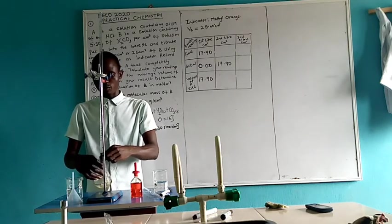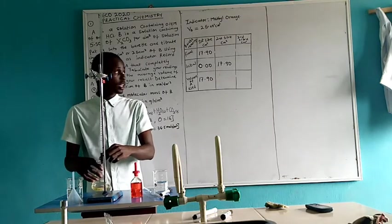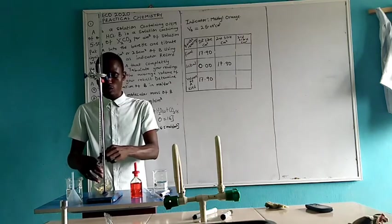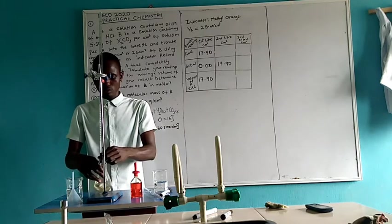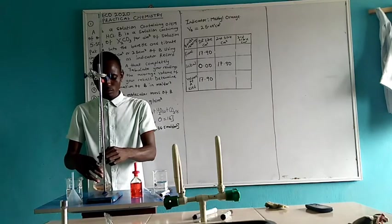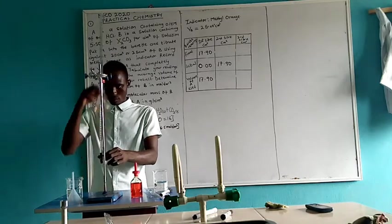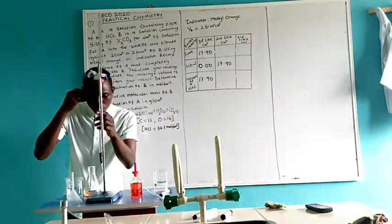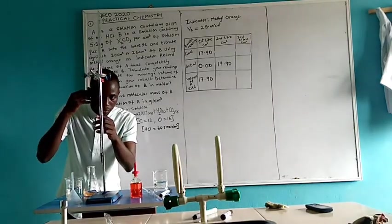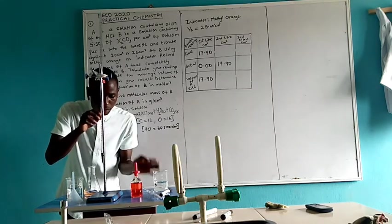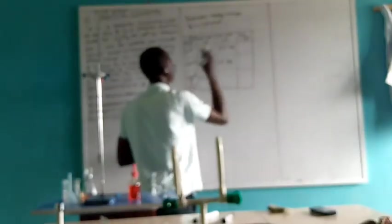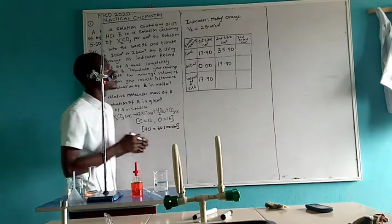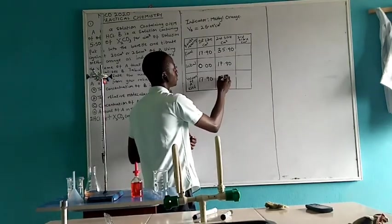We'll go for the second titration. When it is getting close to 35, then I have to be careful. Since my first range told me that it's 17.90, 17.90 times 2 getting to 35, I have to be very, very careful. The color has changed. The value now is 35.9. Subtracting these, I'm going to have 18.00.